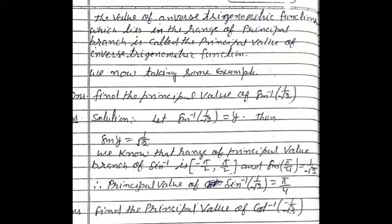So sin y = sin(π/4). The principal value branch lies in [−π/2, π/2], and sin(π/4) = 1/√2. Therefore, sin⁻¹(1/√2) = π/4.